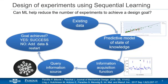Then you ask yourself, have I met my criterion? If you're done, great. If you're not done, you add your new data to your existing data and start all over. But now you're starting with more data, so your models are going to be better, and the guess of the next experiment will be more accurate. As you iterate, you get more data, you get better models, more predictive power, and you're moving faster towards your design goal. We'll show you with an example that you can actually reduce the number of experiments very dramatically using this technique.